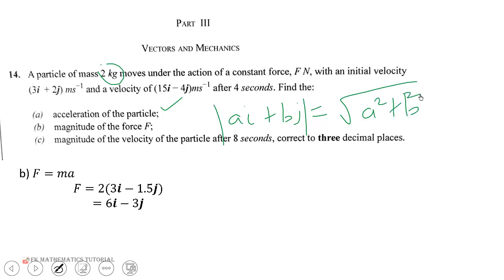We use that formula here. a is 6 and b is -3, giving us √(6² + (-3)²) = √(36 + 9) = √45 = 3√5 newtons. Remember to add the units.